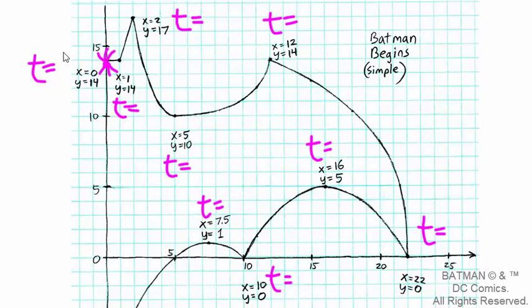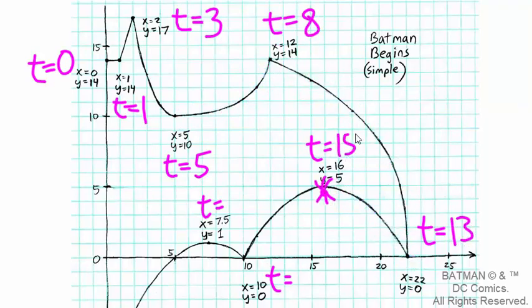t equals zero, t equals one, t equals three, t equals five, t equals eight, t equals thirteen, t equals fifteen, t equals seventeen, t equals eighteen, and just off the screen at the tip of the tail, t equals twenty-one.